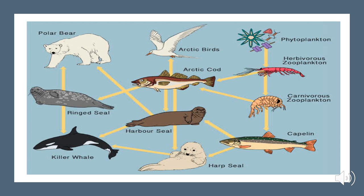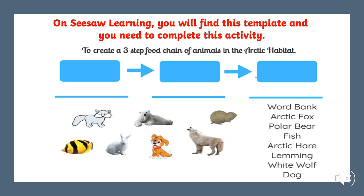Have another go. Good job. Now on this next activity, again you will find this on CISL Learning. You need to create a three-step food chain of animals in the Arctic habitat. Simply drag the picture of the animals to the box and then label them by writing down their names on the lines below. A word bank is provided to help you out with the spellings of the animals.